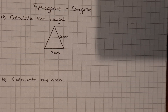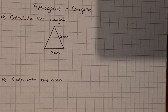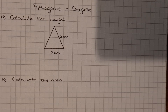We're going to do a couple of Pythagoras questions that don't necessarily look like Pythagoras questions to begin with. We've got a question with part A and part B. Part A is to calculate the height of the triangle below, and part B is to calculate the area.